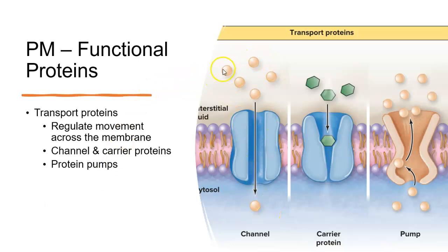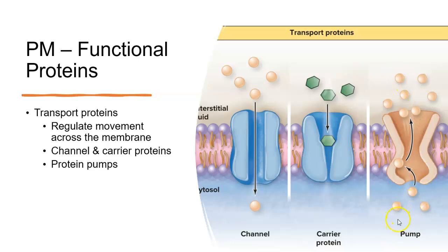A carrier protein is going to bind something. The little green molecules — probably glucose — have more of them outside than inside, so they attach to the carrier. It's sort of like putting a key in a lock: it changes shape a little bit, opens up, and the molecule falls into the cell. Pumps actively move things in and out — usually from where there's less to where there's more, opposite of simple diffusion. It's like pumping water out of your boat back into the ocean.